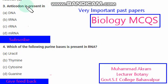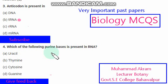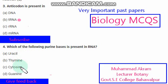Anticodon is present in — DNA, transfer RNA, ribosomal RNA, or messenger RNA? Anticodon is present on transfer RNA. The right option is option B. Which of the following purine bases is present in RNA? The right option among these is option D.